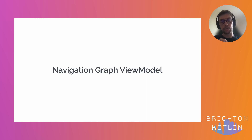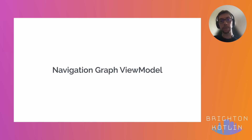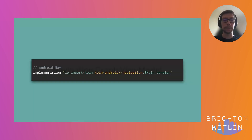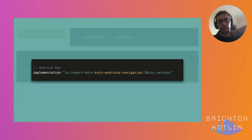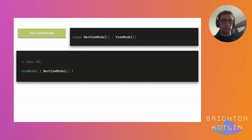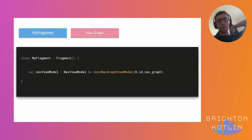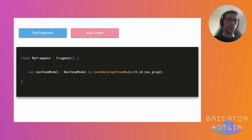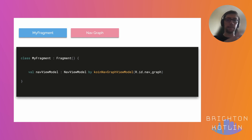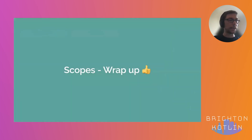Another special case is binding a ViewModel to the navigation graph. Your navigation graph survives your application, and you may want to retrieve the same ViewModel across your application tied to navigation rules. This is what we have in the koin-androidx-navigation module. You declare your standard ViewModel, but in the UI you use 'koinNavGraphViewModel(R.id.nav_graph)'. This binds your ViewModel to the navigation graph, letting you retrieve the same ViewModel instance for that navigation graph.